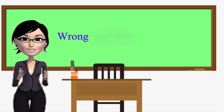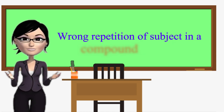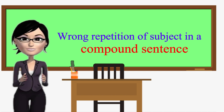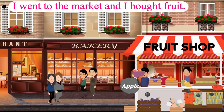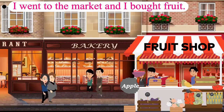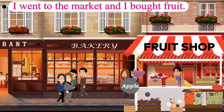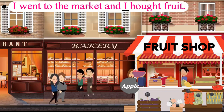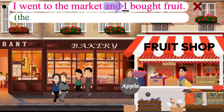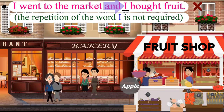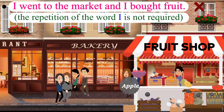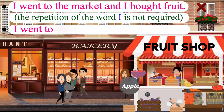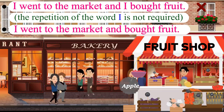Wrong repetition of subject in a compound sentence. Let us look at the sentence: 'I went to the market and I bought fruit.' Here, the word 'I' said after 'and' is not required. Please repeat the correct sentence after me: I went to the market and bought fruit.